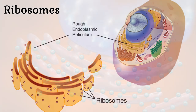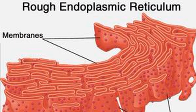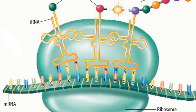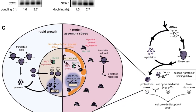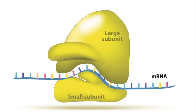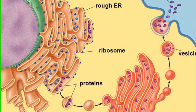Ribosomes – Ribosomes are dense, spherical, granular particles which occur freely in the matrix or remain attached to the endoplasmic reticulum. Ribosomes are sites for protein synthesis. As a result of diverse metabolic activities of the cell and its organelles, a variety of soluble and insoluble chemical products accumulate within the cell. These are generally found stored in vacuoles or granules. Depending upon their nature, cell inclusions are classified as reserve, secretory, or waste products.